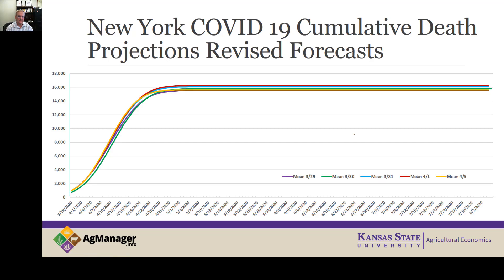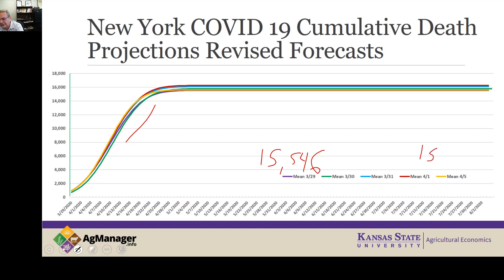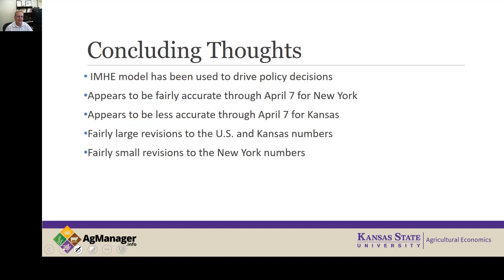Looking at the New York numbers, you can see the difference between the purple and the orange line — in some respects they are very close. The expected cumulative deaths as of the March 29th forecast were 15,546, and as of the April 5th forecast, it was 15,618. So the forecasted mortality for New York increased by about 0.4%.